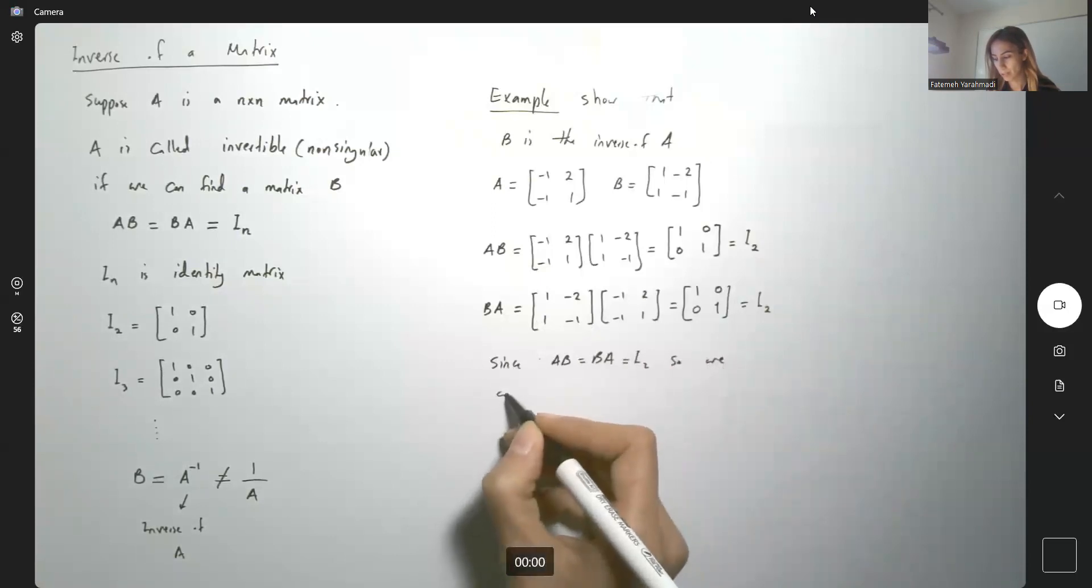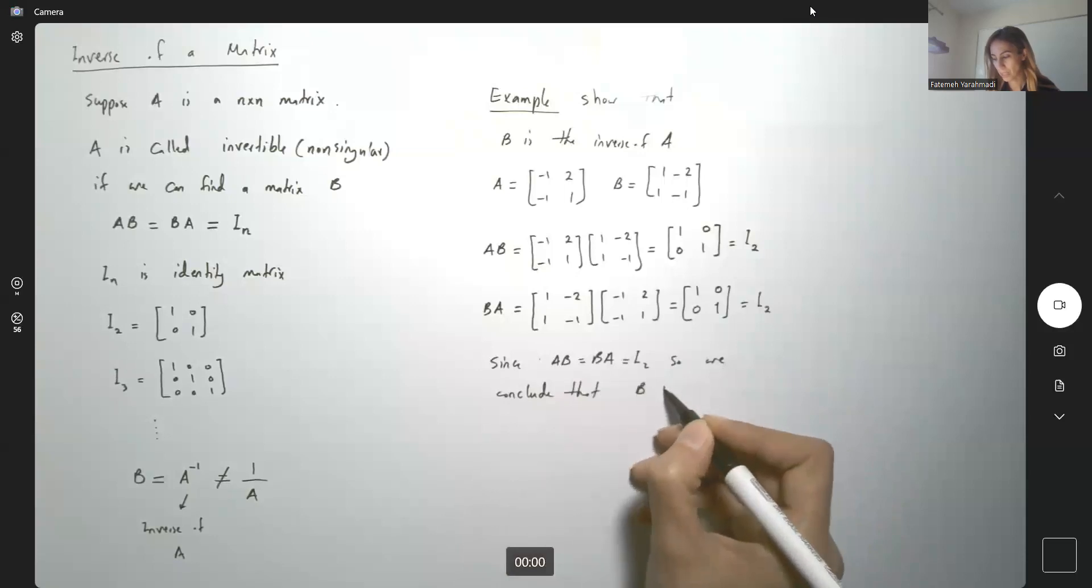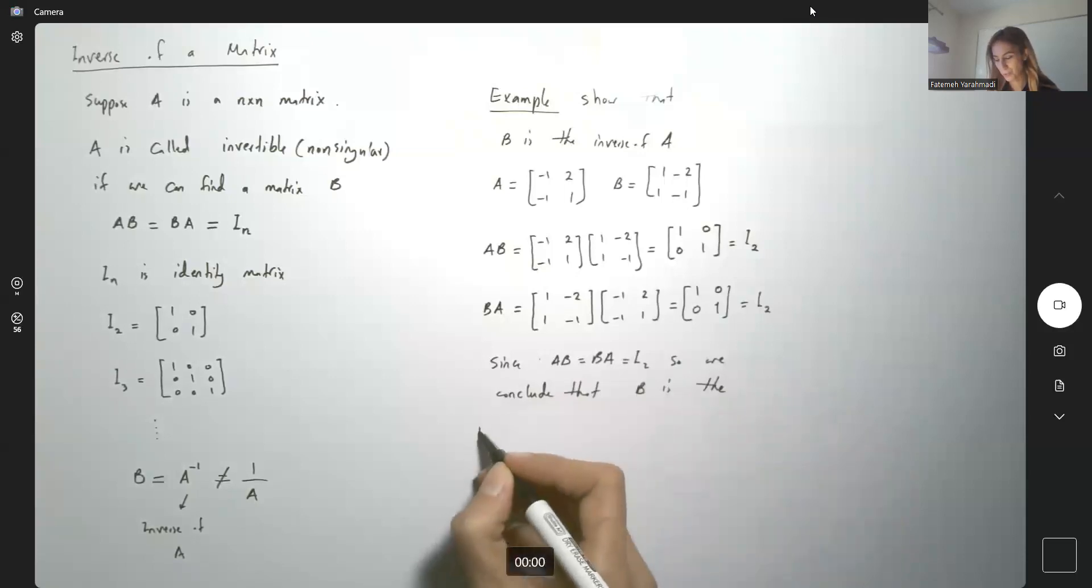we conclude that B is the inverse of A. So you can write B equals to A inverse.